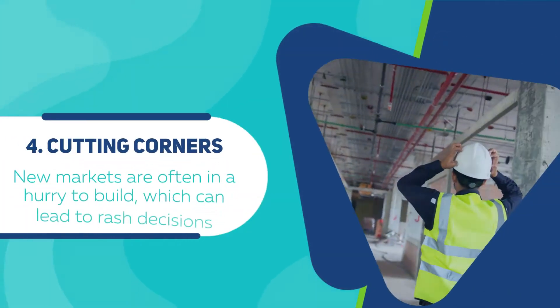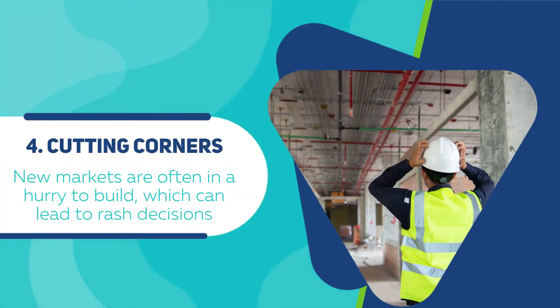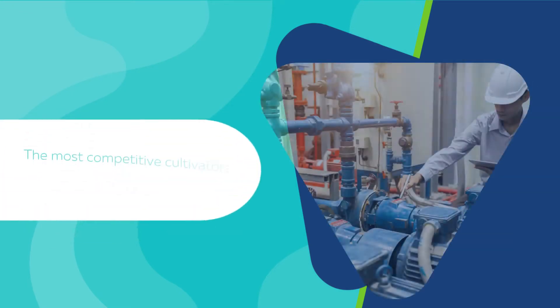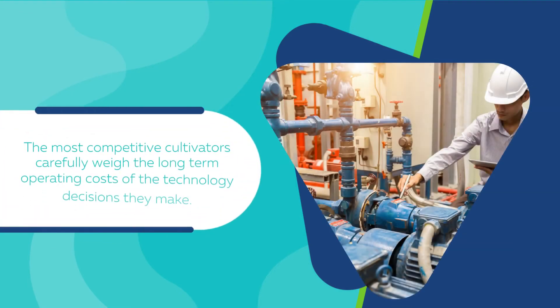Number 4: Cutting Corners. New markets often hurry to build, which can lead to rash decisions. The most competitive cultivators carefully weigh the long-term operating costs of the technology decisions they make.